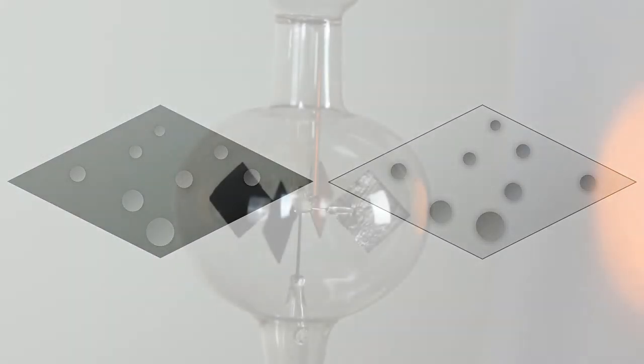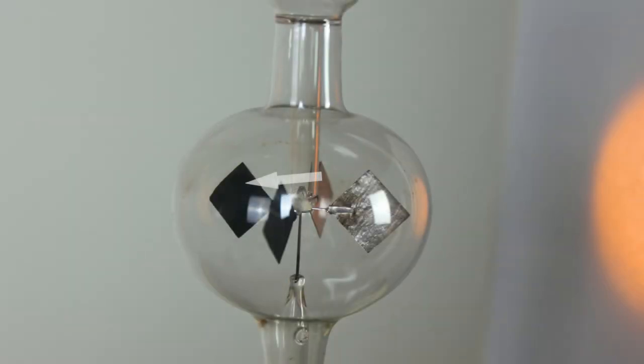Now, when residual gas molecules hit these faster vibrating particles, they receive a stronger momentum through impact interaction than particles on the silver side when interacting. So they experience a larger change in momentum and thus exert a larger force on the platelet in the opposite direction to the particle flying away.